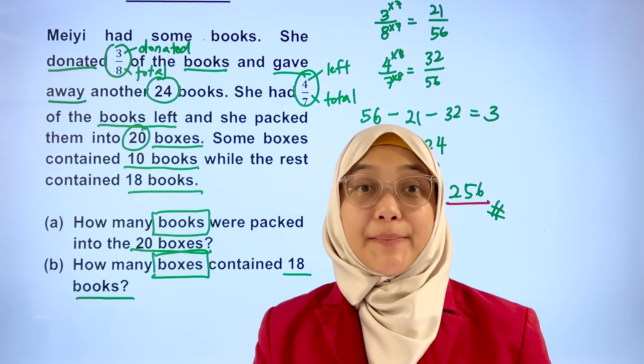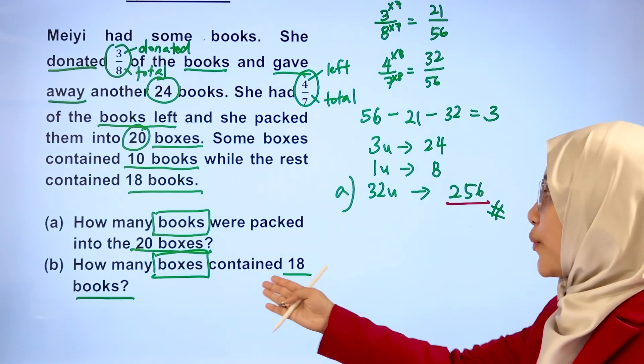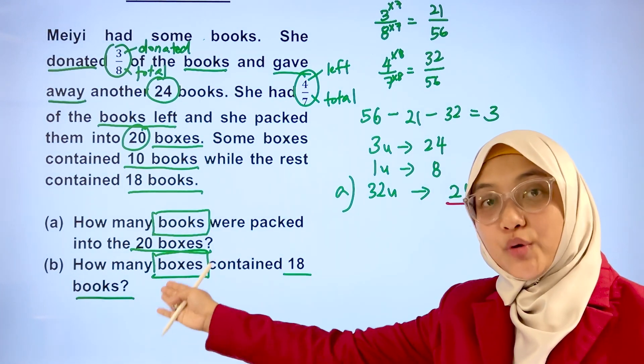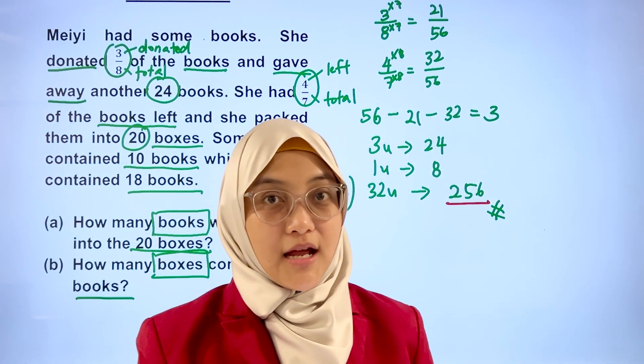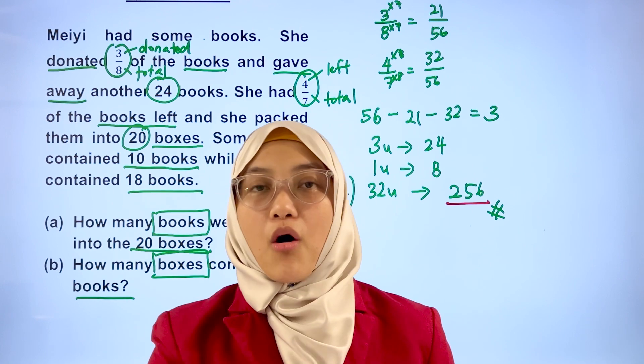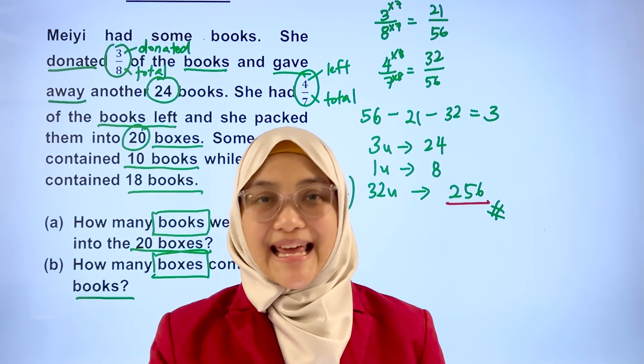Now, let's solve part B together. How many boxes contained 18 books? This is by assumption method. We're going to assume that all boxes contained 10 books.